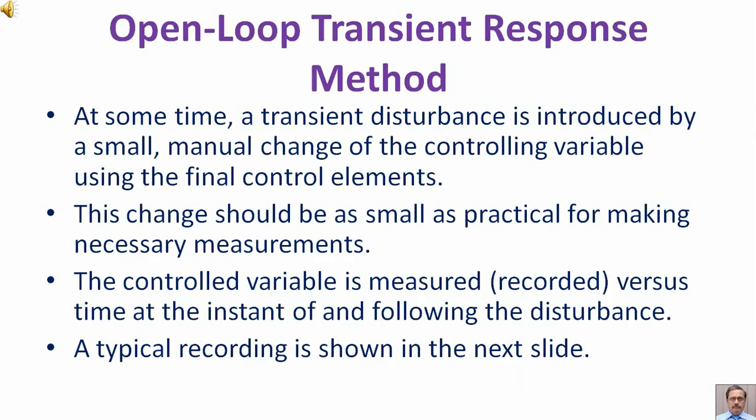Open Loop Transient Response Method. At some time a transient disturbance is introduced by a small manual change of the controlling variable using the final control element. This change could be as small as practical for making necessary measurements. The control variable is measured, recorded versus time at the instant of and following the disturbance. A typical recording is shown in the next slide.